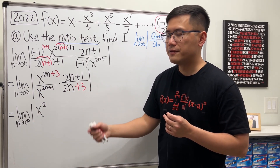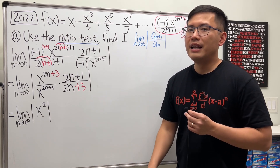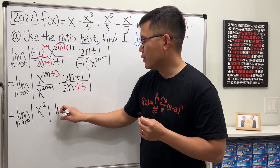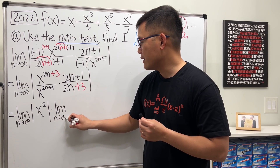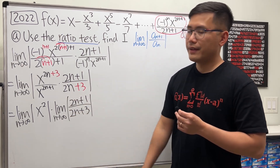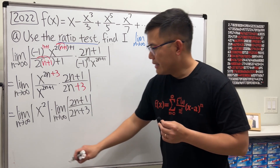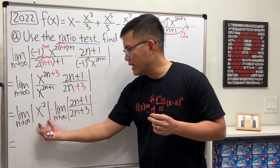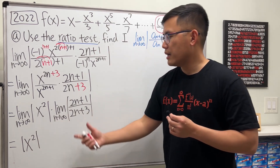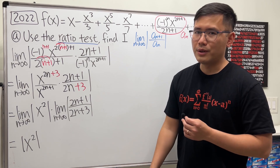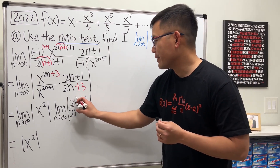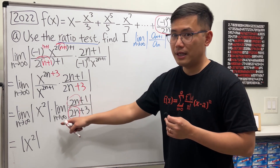Since the absolute value of a product is a product of absolute values, we can separate this. And since the limit of a product is the product of the limits, we focus on the limit as n goes to infinity of (2n+1)/(2n+3) separately. The x squared part has no n's, so it stays as absolute value of x squared. For (2n+1)/(2n+3), as n goes to infinity, the leading 2n terms dominate and the limit is just 1.